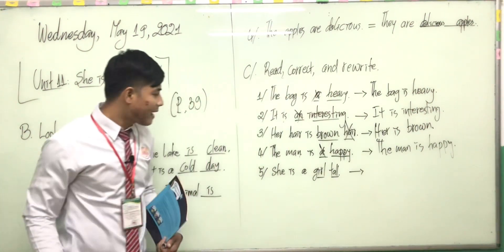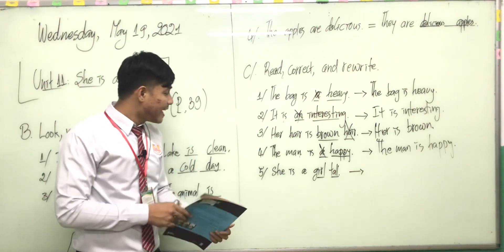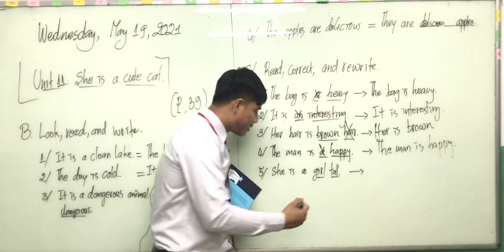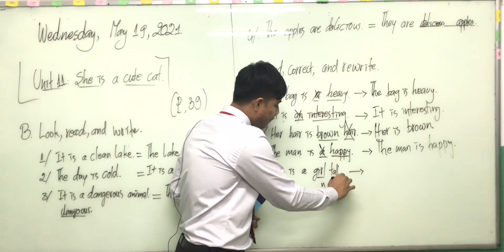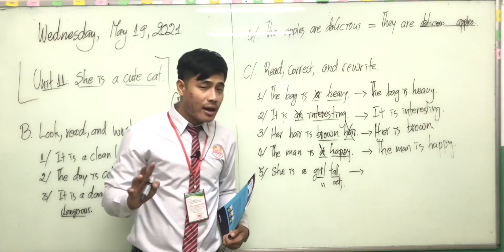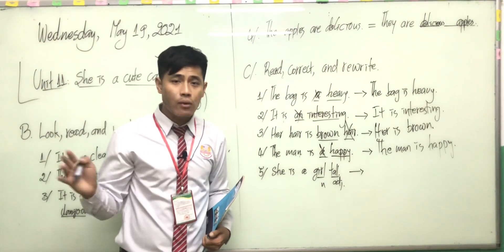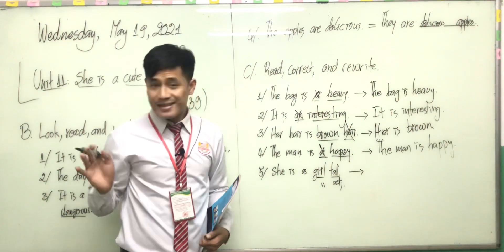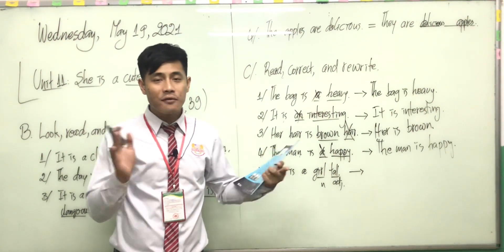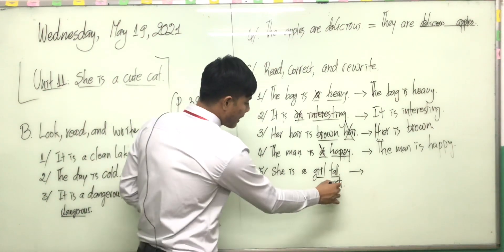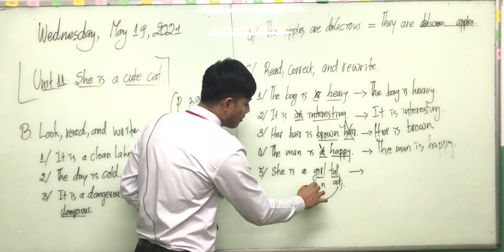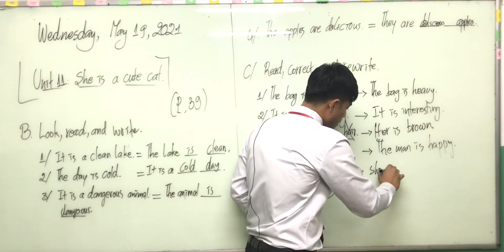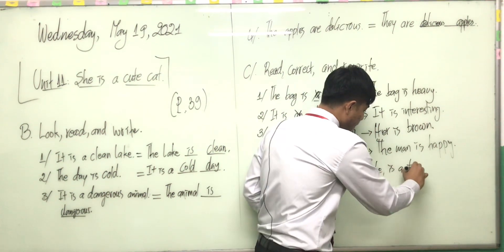Number five: 'She is a girl tall.' Look at this — 'girl' is a noun and 'tall' is an adjective. We use adjectives to describe nouns, and the position of an adjective is adjective plus noun, not noun plus adjective. Also: 'to be' plus adjective. So we should put the adjective before the noun — 'She is a tall girl.'